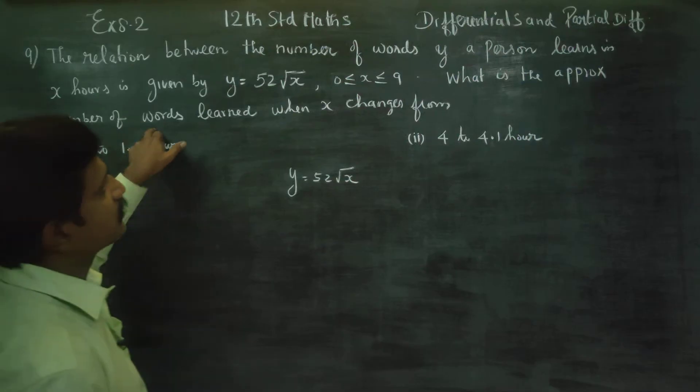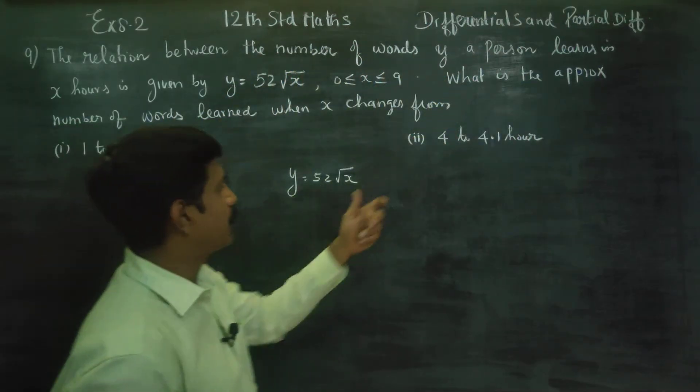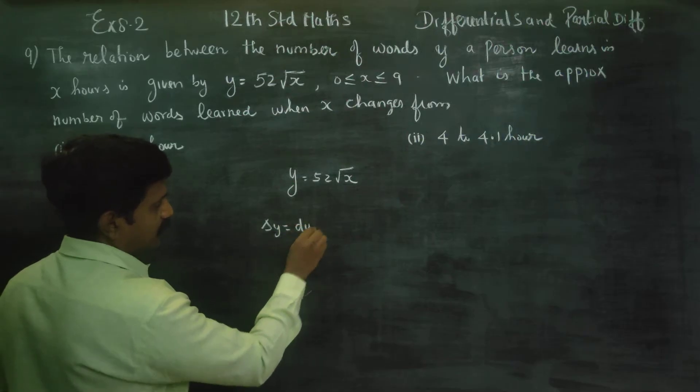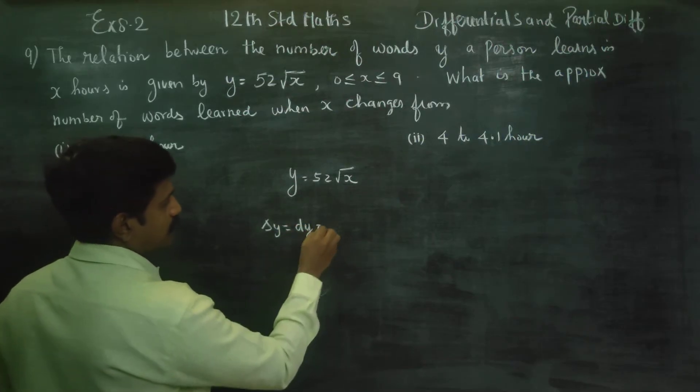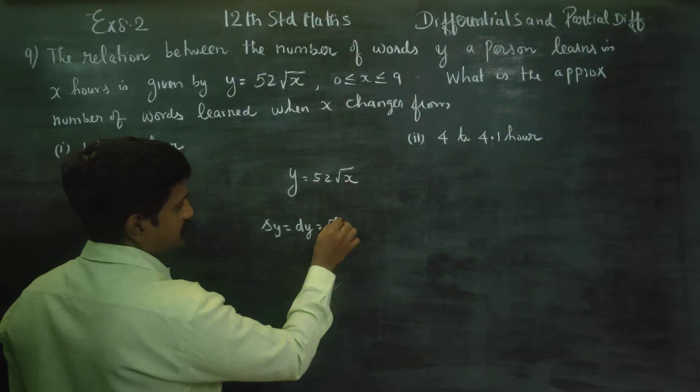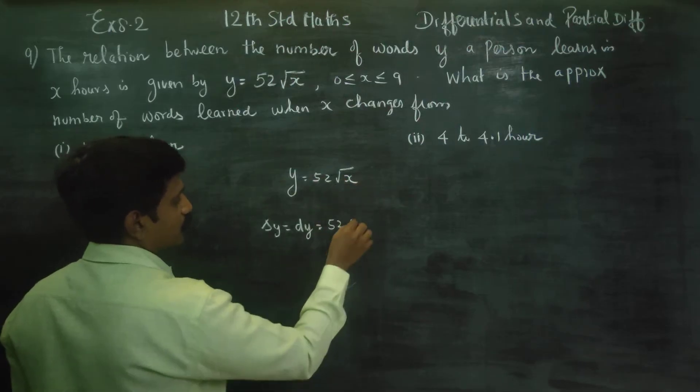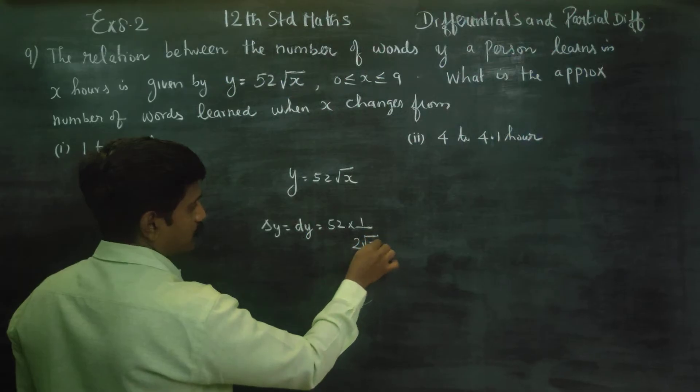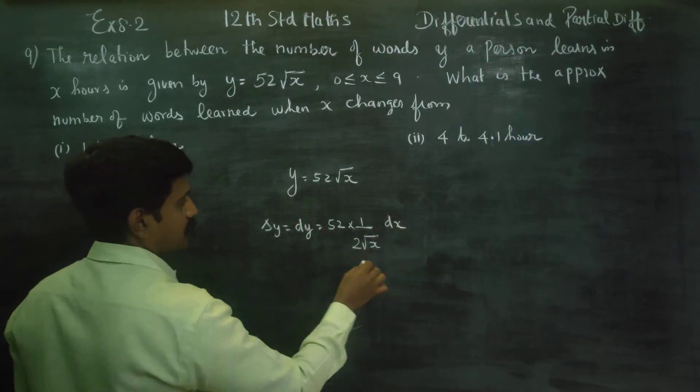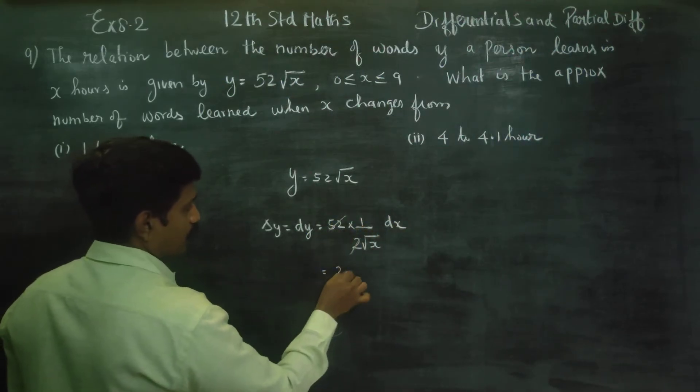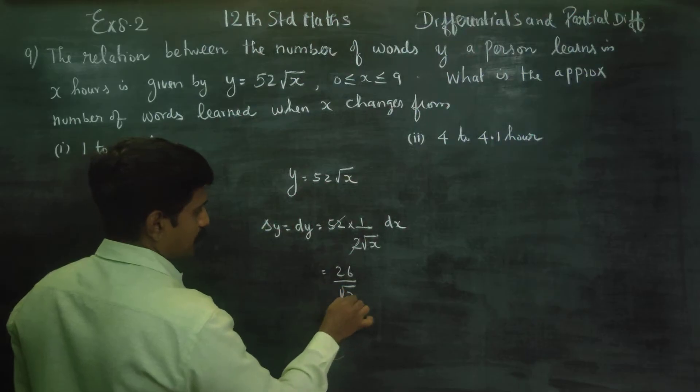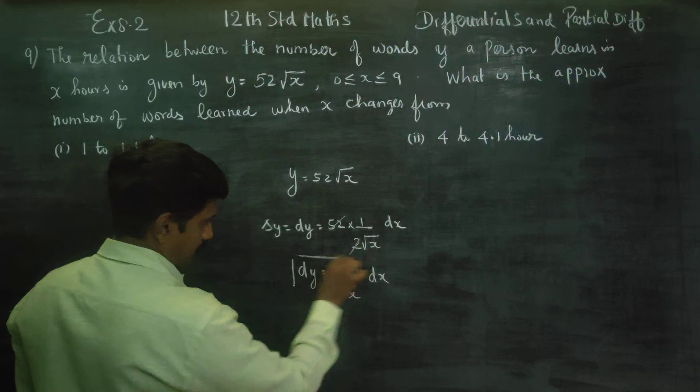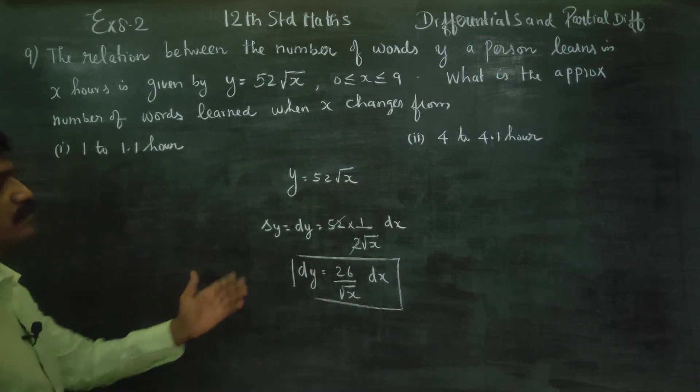Approximate change in number of words. Number of words is y. Approximate change is delta y or dy. I am going to find the value of dy. dy means you have to differentiate this. Differentiating 52 square root of x gives 1/2 into square root of x into dx. If you cancel it, you will be getting 26 by root of x dx. This is my dy. This is common for both the sums.